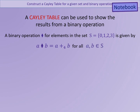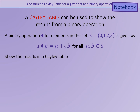For example, if a binary operation is defined on the set of numbers 0, 1, 2 and 3, and a operation b is defined as a plus b mod 4, then we can fill in the results in a Cayley table.